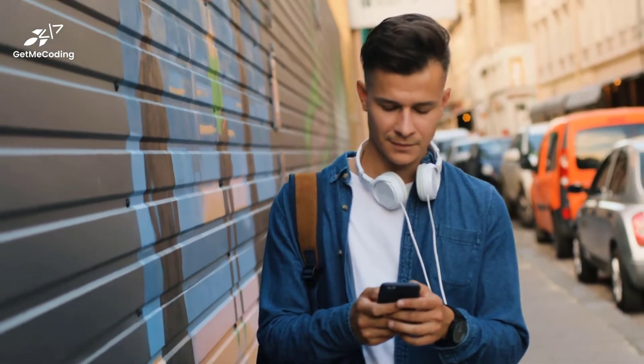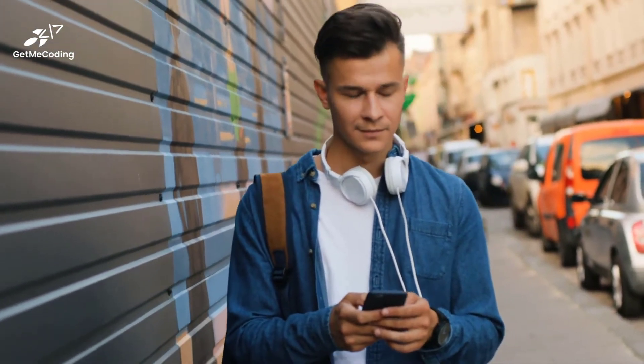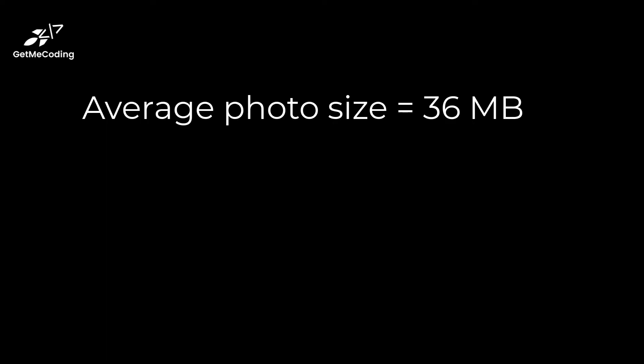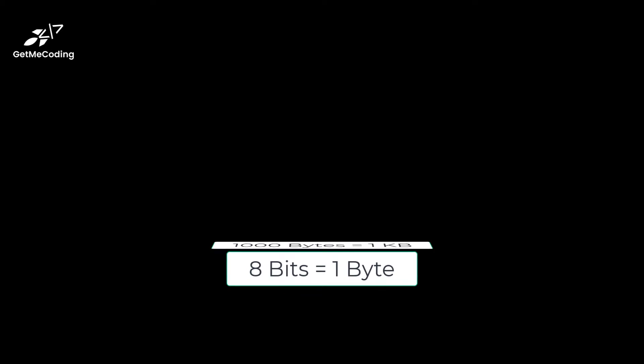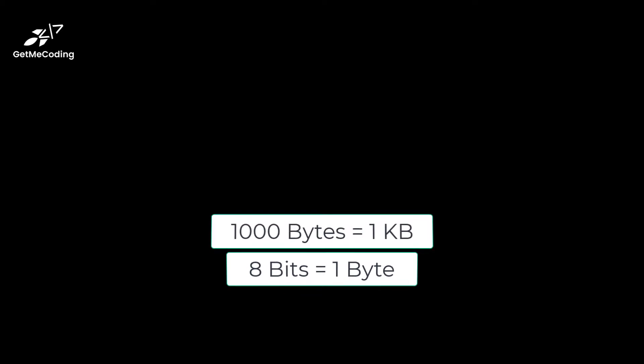Now, working with our devices, we do have to realize there are going to be some limitations. So let's take a look at a typical phone or device that has about 500 gigabytes of storage. An average photo is 36 megabytes, which means we can store about 14,000 photos.